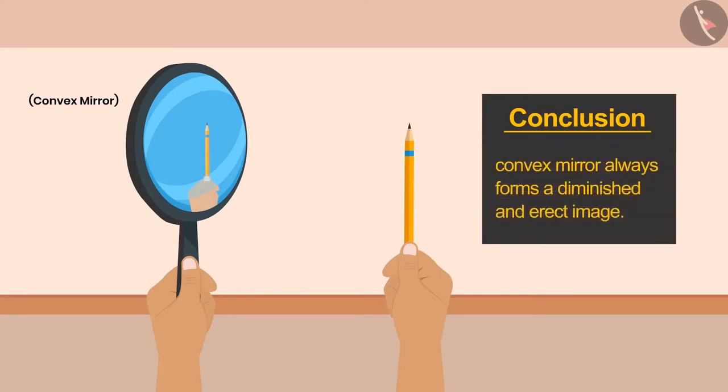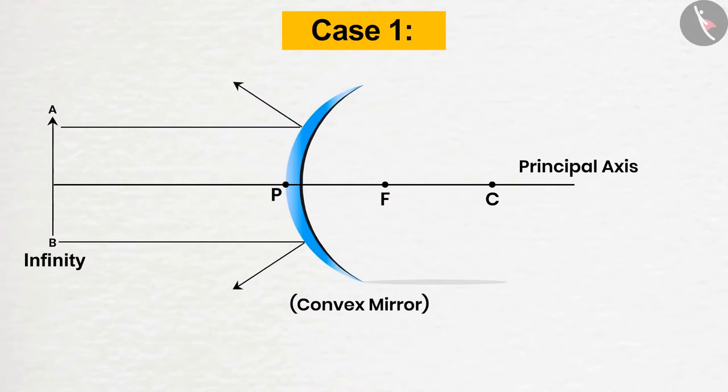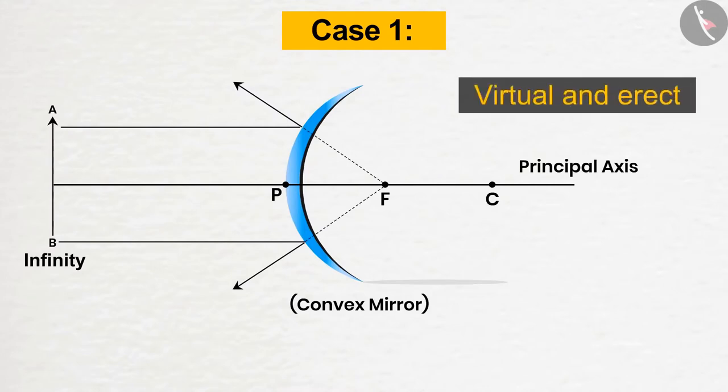If we talk about the ray diagrams, then only two cases can be possible for convex mirror. Case 1. Position of the object at infinity. If the object is placed at infinity, the rays will travel parallel to the principal axis. Then get diverged on falling to the mirror and the image appears to be formed behind the mirror. The size of the image formed is very small and its nature is virtual and erect.